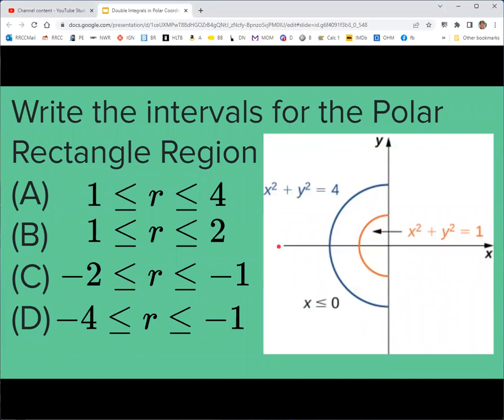So let's do a quick concept check on writing out the intervals for a polar rectangle. We've got a polar rectangle shown over here on the right, and then we've got some possible choices for the interval for r that accompanies that. Pause the recording if you need a moment. And you should find that the correct answer is b, that r is between 1 and 2. This inner radius with the orange line is half of a circle with radius 1, and then this outer radius is half of a circle with radius 2. So r goes from 1 to 2.